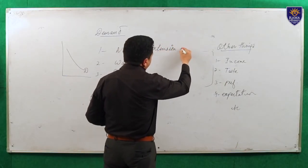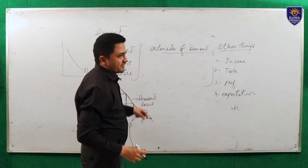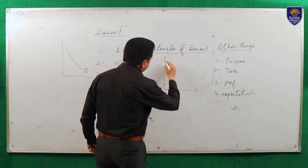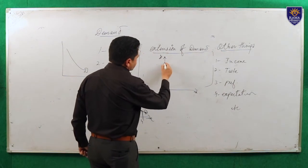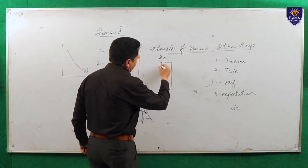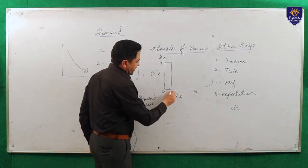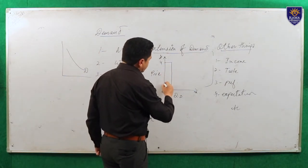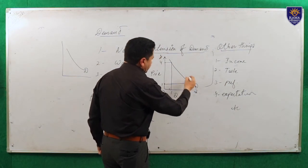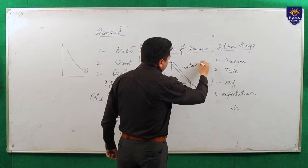Extension of demand means increase in demand. We can understand with the help of this figure. Suppose the price is 4, so demand is 1 — according to the law of demand. And the price goes down from 4 to 1, it is obvious that demand increases. So it shifts from here to there. This is the part of extension of demand.